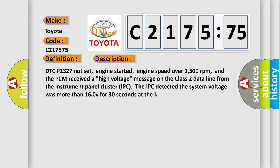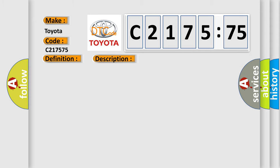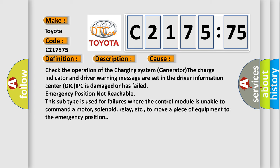And now this is a short description of this DTC code. DTC P1327 not set, engine started, engine speed over 1500 revolutions per minute, and the PCM received a high voltage message on the class 2 data line from the instrument panel cluster IPC. The IPC detected the system voltage was more than 160 V for 30 seconds.